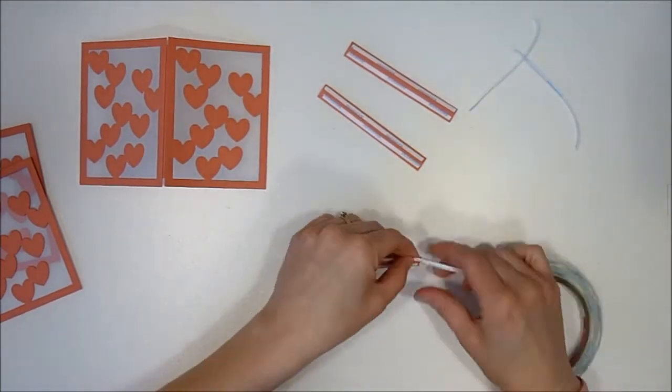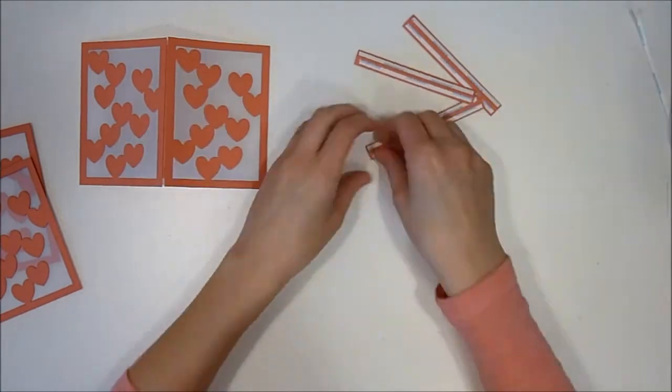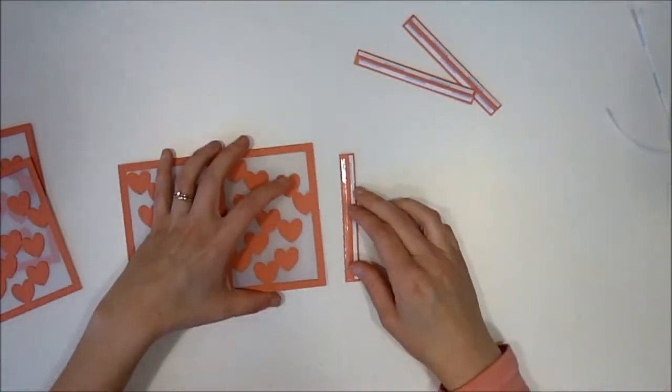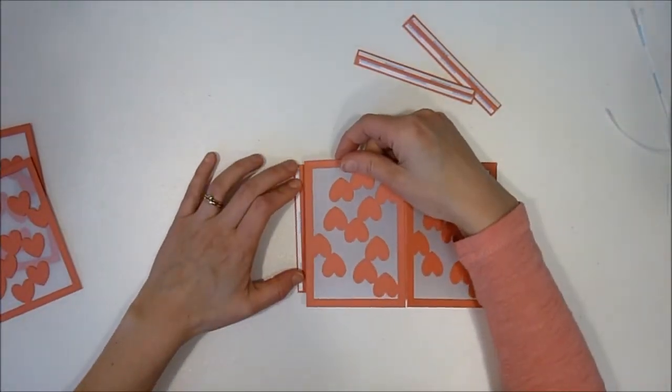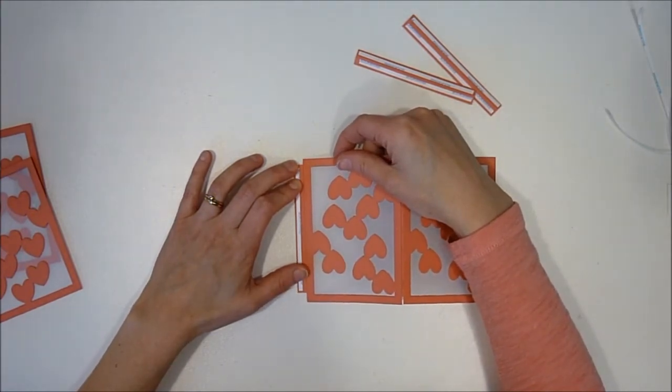Once you get them all adhered on, I just only peel off one side at a time, then I don't have to worry about the tape sticking to my fingers where I don't want it to or anything like that.